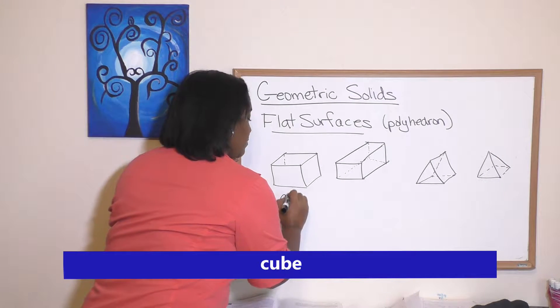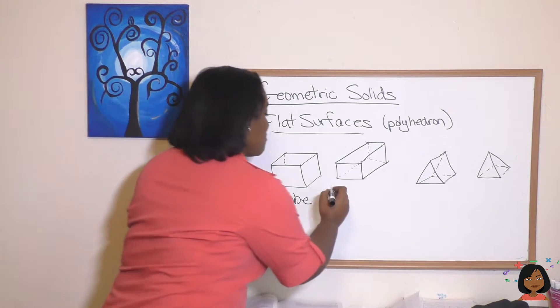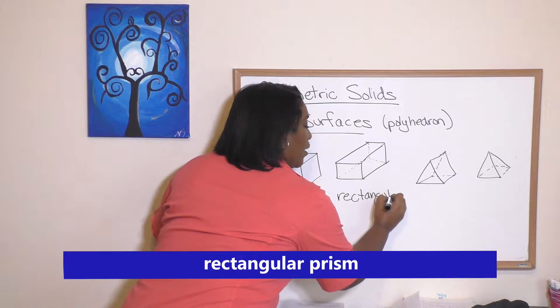Our next one is based off of a rectangle. We call it a rectangular prism.